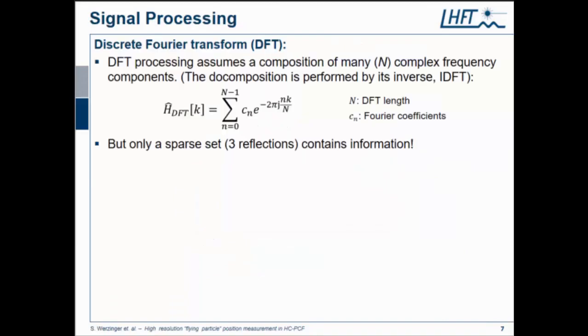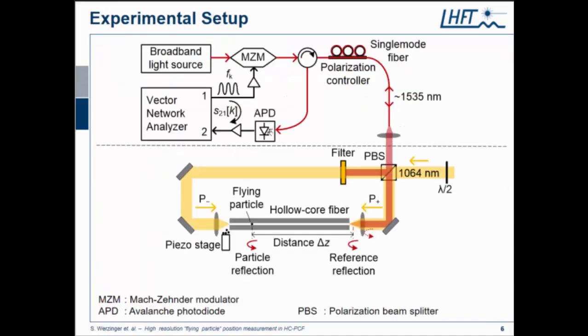Here's the complete setup we used for the experiments. The upper part is the setup I just showed you. We operated in the telecom wavelength range at 1535 nanometers, and we bring this, it's all fiber coupled, and we bring our light into the free space path of the other setup where the trapping light is a high-power near-infrared laser. We split this into two parts with a polarization beam splitter, and by using a half-wave plate we can adjust the ratio from both sides.